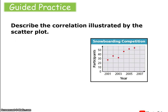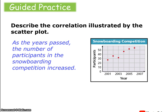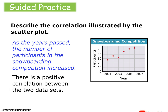What about this correlation? You're looking at a snowboarding competition, comparing the years with the number of participants. As time and years pass, the number of participants in snowboarding competition has increased. Snowboarding continues to gain popularity, so that makes sense. This would be a positive correlation — as time elapses, participants are increasing.